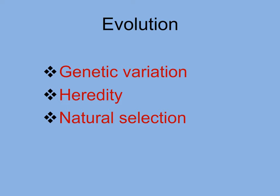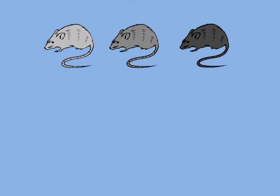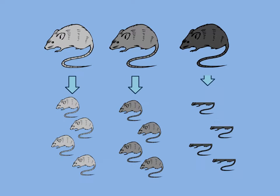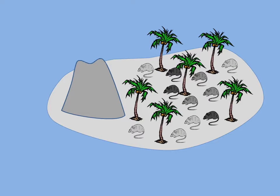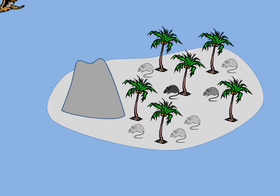On an island, we have a mouse population with obvious variation in fur color: light gray, medium gray, and dark gray. Fur color is a heritable characteristic — light parents produce light gray offspring, medium parents produce medium gray offspring, and dark parents produce dark offspring. On their island home, there is a somewhat active volcano. The mice scurry across light-colored sand looking for seeds to eat. While the mice have no land predators, they do have aerial predators that prey upon the mice they can see best against the light sand — the mice with darker fur. So the dark-furred mice are selected against, and the lighter mice survive longer and produce more offspring.